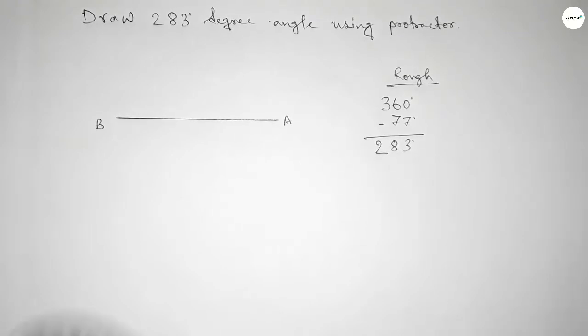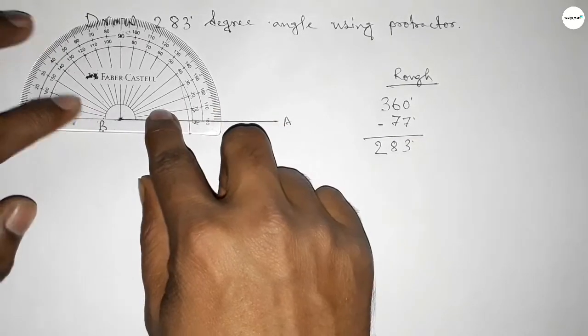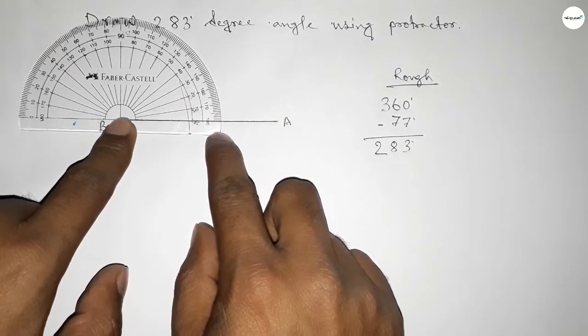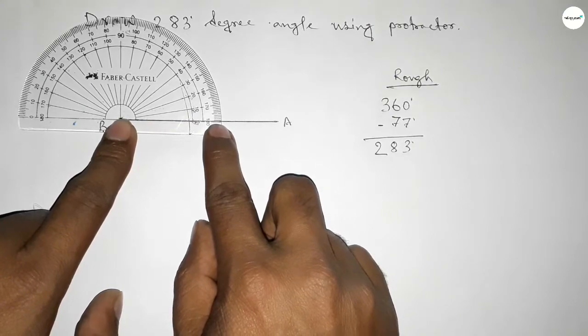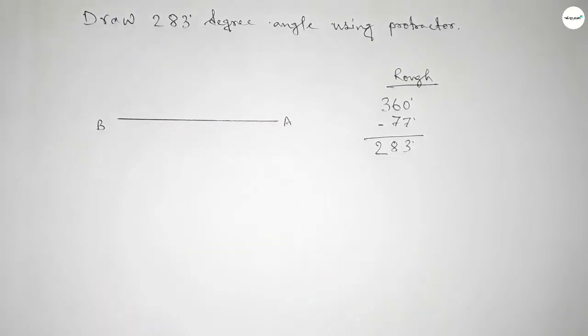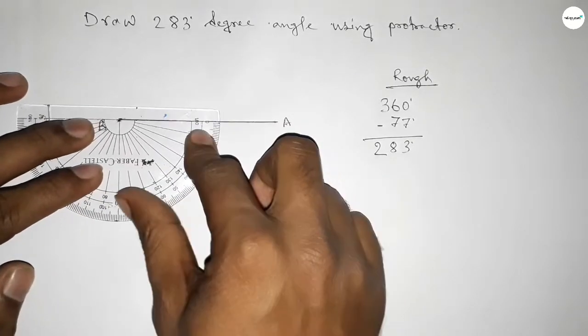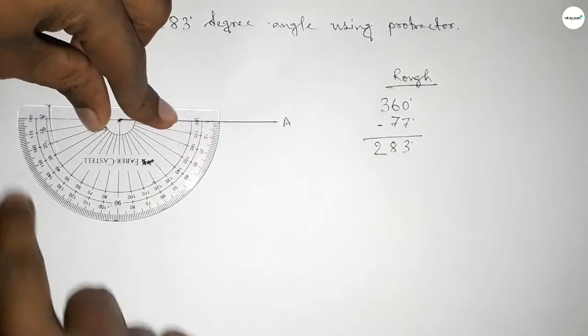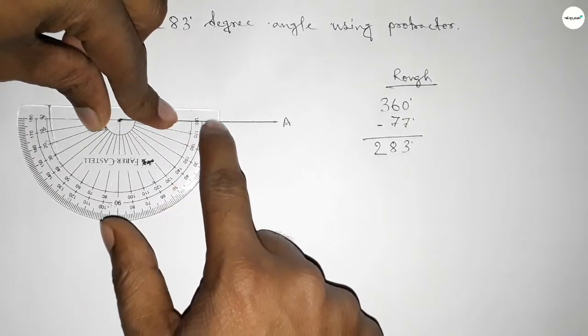Counting the angles, this is 0, from starting 0 to 180 degrees. Plus putting the protractor on point B this way and counting total angle, so this is total 360 degrees.